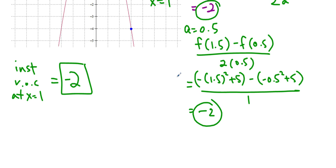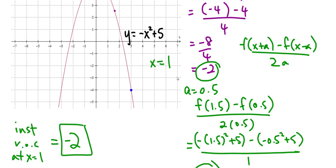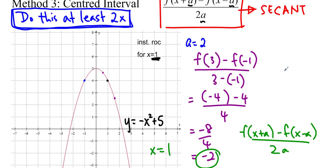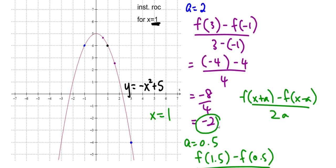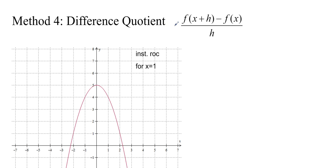Usually when I teach this, my students will immediately ask me: well, why didn't you just start with a smaller interval? Why did you start with an interval of 2? And that's a really good question, and it actually leads us to method number 4. So instead of starting with 2 and going to 0.5, or going even further to 0.1 and then 0.01, why don't we just start with 0.01 or 0.001 — something really small?